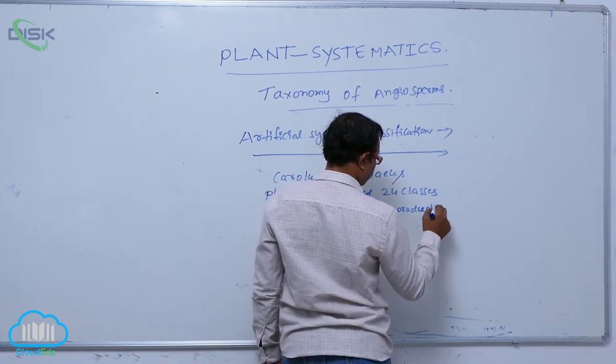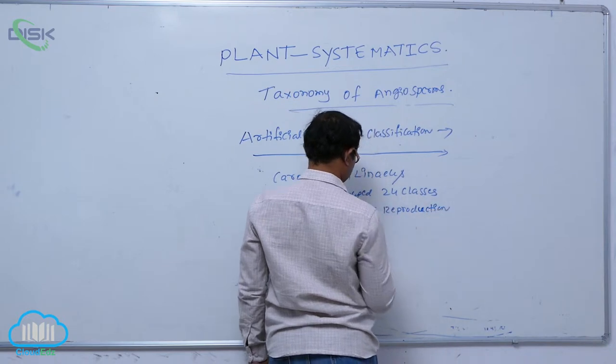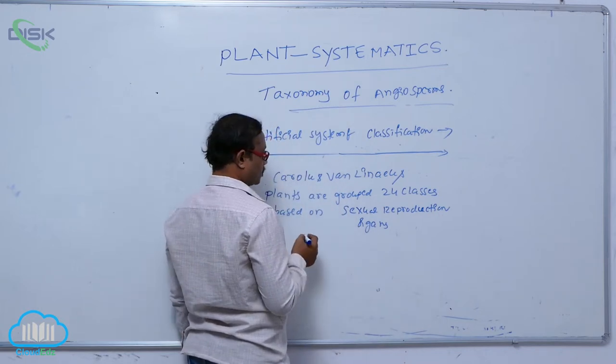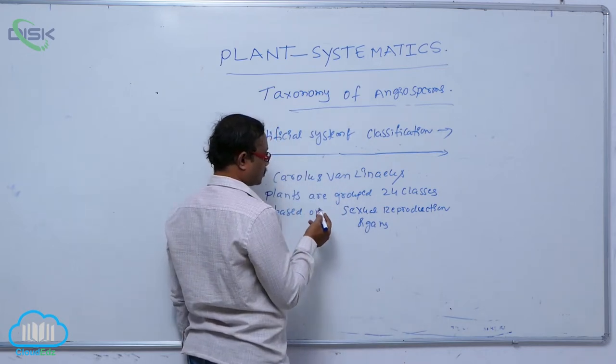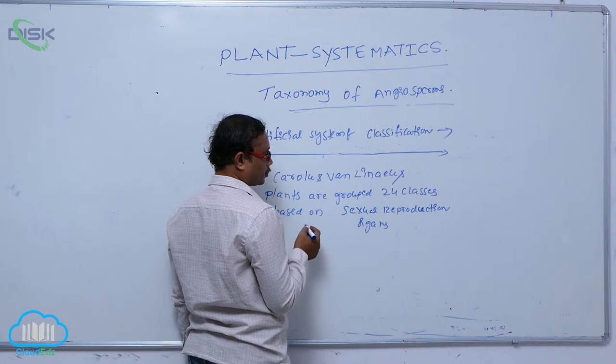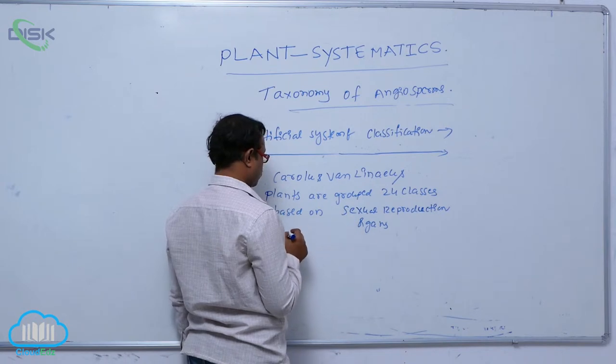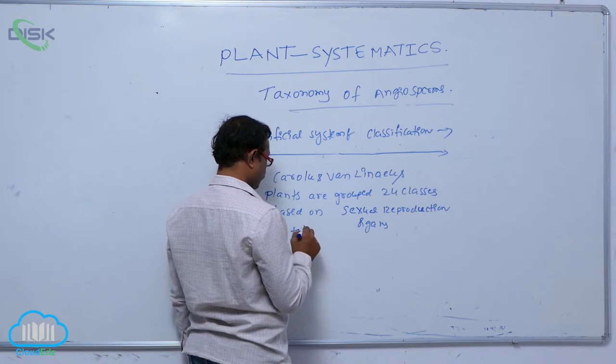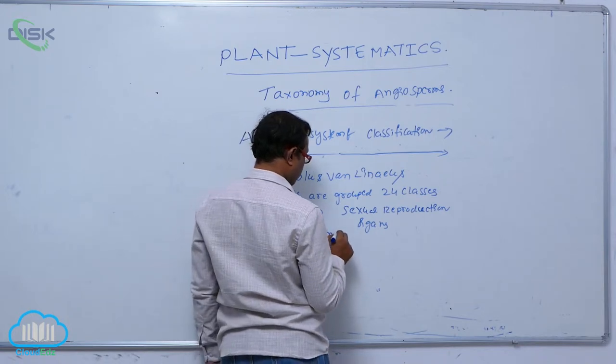Based on sexual reproduction organs, plants are grouped into 24 classes. He considered the number of stamens,